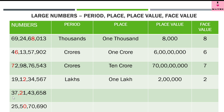Now let us come to this number: 37 crore 21 lakh 43,658. We have to find all these things for digit 2 again. Children, please note — in the previous number the digit 2 was at 1 lakh place, but in this number the digit 2 is at 10 lakh place. So the period for this 2 is also lakh, but the place is 10 lakh. Since 2 is at 10 lakh's place, its place value is 20 lakh.